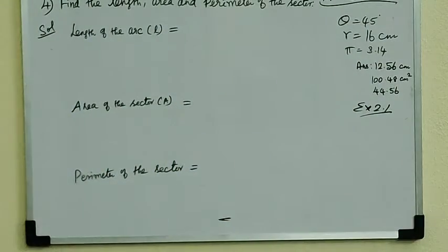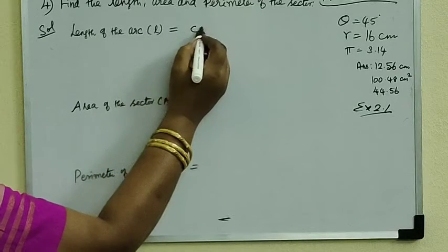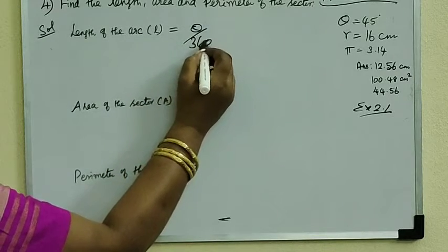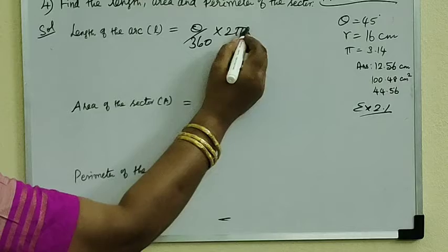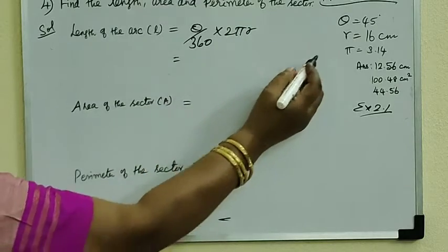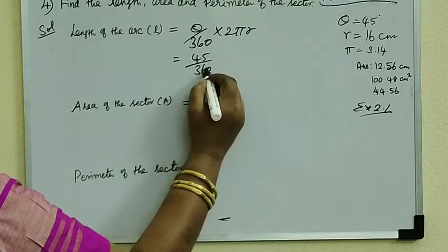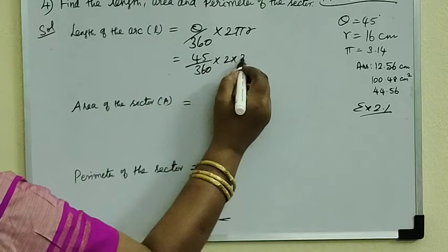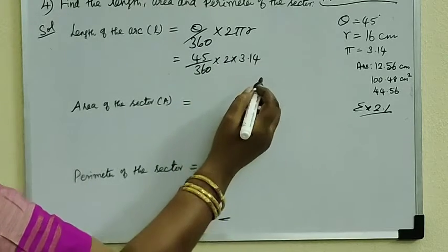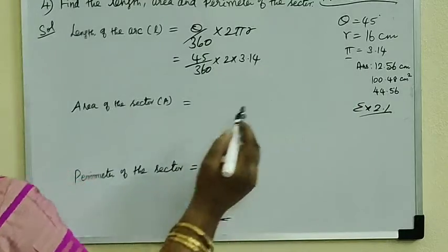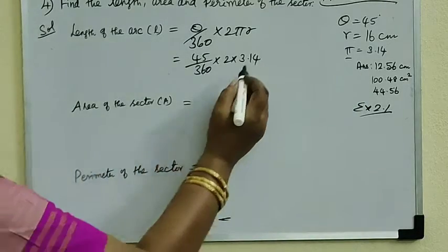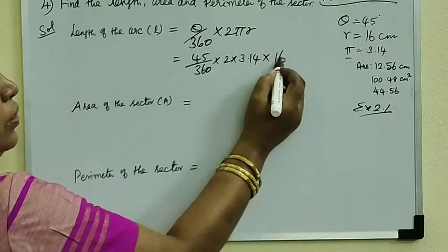Length formula is theta by 360 into 2πR. Theta value is 45 degrees. So 45 by 360 into 2 into pi equal to 3.14. It is given in the question, pi value 3.14.